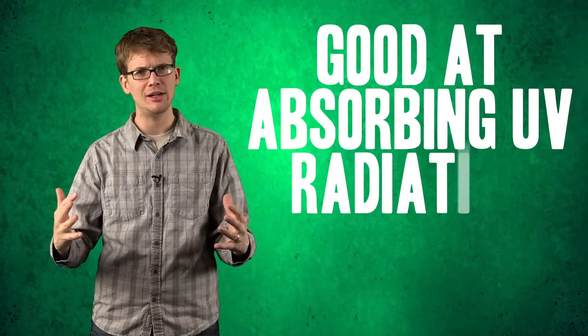It turns out no one knows for sure why marijuana produces THC, but there are some fascinating theories. The first, THC turns out to be really good at absorbing UV radiation. And so it's possible that since marijuana often grows at higher elevations, that it needs the ability to absorb that radiation without harming the plant.